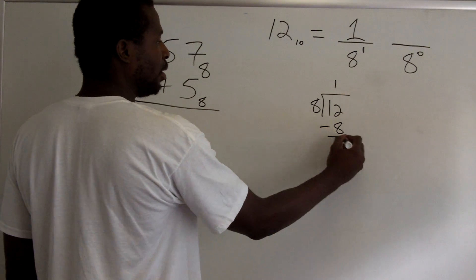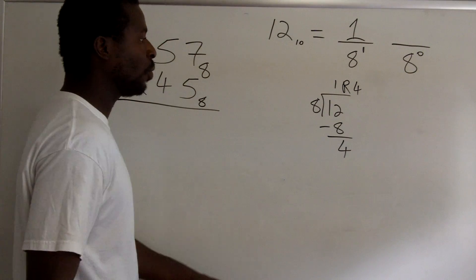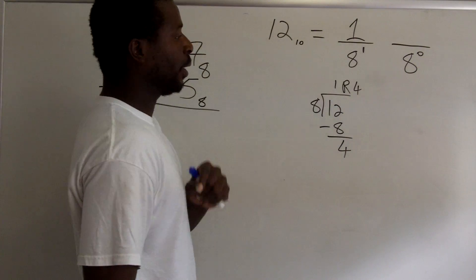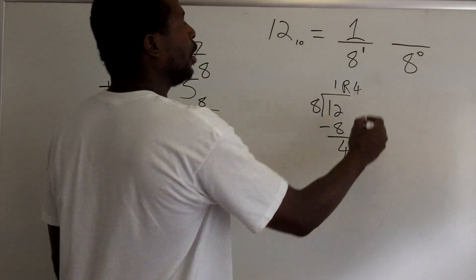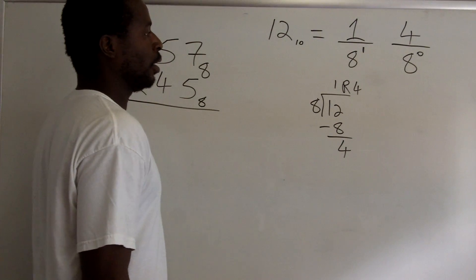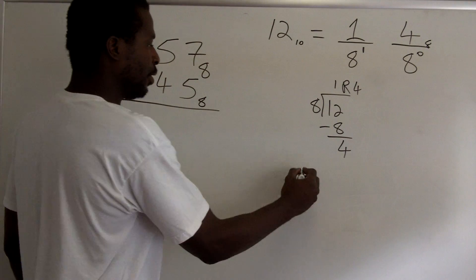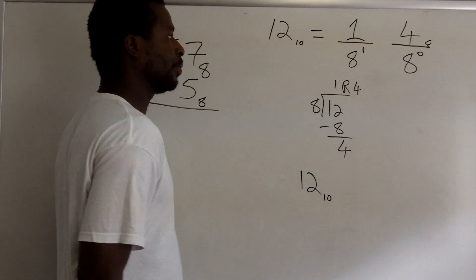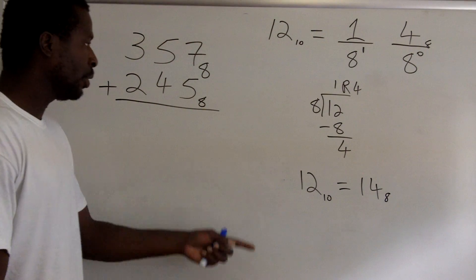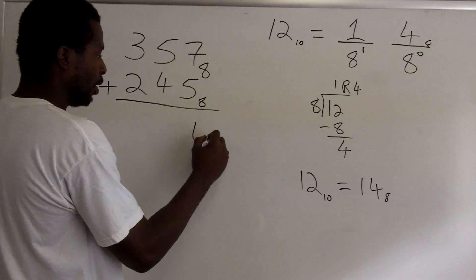1 times 8 is 8, and we subtract to get a remainder of 4. Now in the ones place, how many groups of 1 are there in the remainder 4? There are 4 groups of 1 in 4. So 12 base 10 is actually equal to 14 base 8. I'm going to record the 4 and carry the 1 to the next place over.